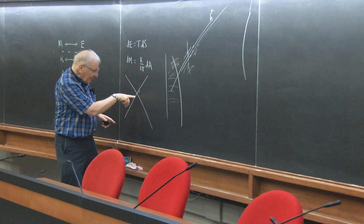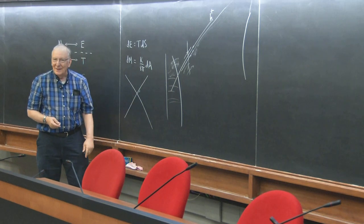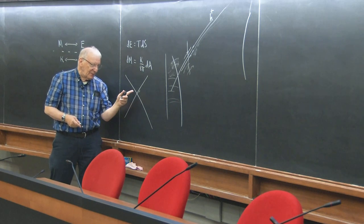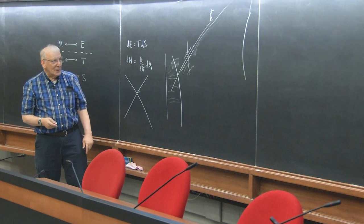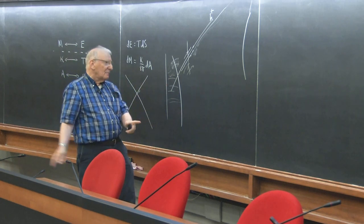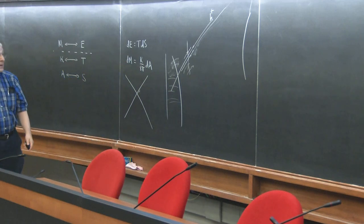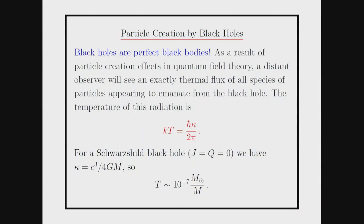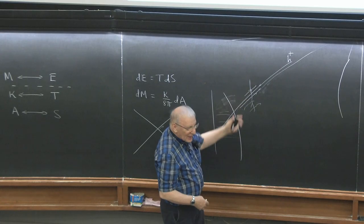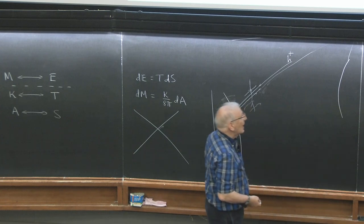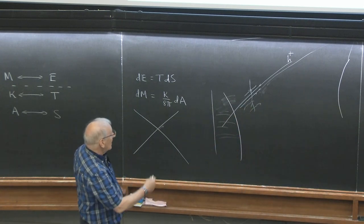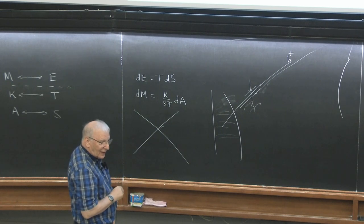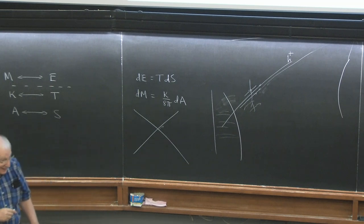Unruh was working on this at the same time and realized there was an issue of boundary conditions — really, the initial choice of quantum state. Hawking resolved all that by going to the physical gravitational collapse case. When he did the calculation, amazingly he found that yes, you got particle creation — some messy thing depending on details of the collapse — but instead of going to zero at late times, the late-time observer would see a steady, non-zero flux of particles.